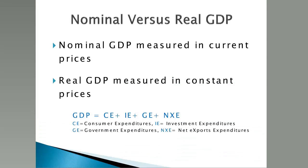The nominal GDP measures the output of the economy at current prices. Using current dollars does not take inflation or deflation into account. Inflation causes prices to rise and increases the nominal GDP. To provide a more accurate picture of the economy, the real GDP is calculated.